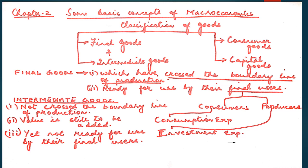When the consumers buy the final product, they incur an expenditure known as consumption expenditure. When the producers buy the final product, the expenditure made by them is known as investment expenditure. The concept of crossing the boundary line of production is used to differentiate between intermediate goods and final goods. It is an imaginary line around the production center. Goods which remain within the production boundary are intermediate goods, and when goods cross the production boundary they become final goods.